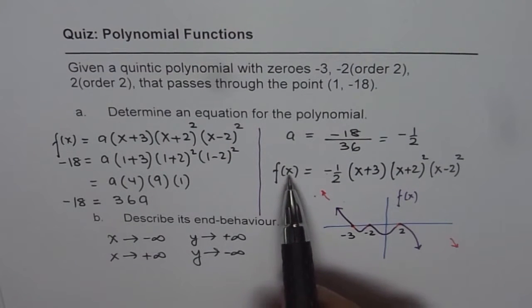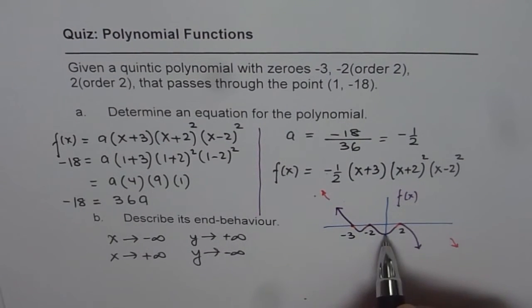We can always find f(0), and then we'll get the y-intercept. So as an exercise, you can neatly sketch this graph and also find the value of f(0), that is the y-intercept. I hope that helps you to understand how to sketch and analyze a polynomial function given its zeros. Thank you and all the best.